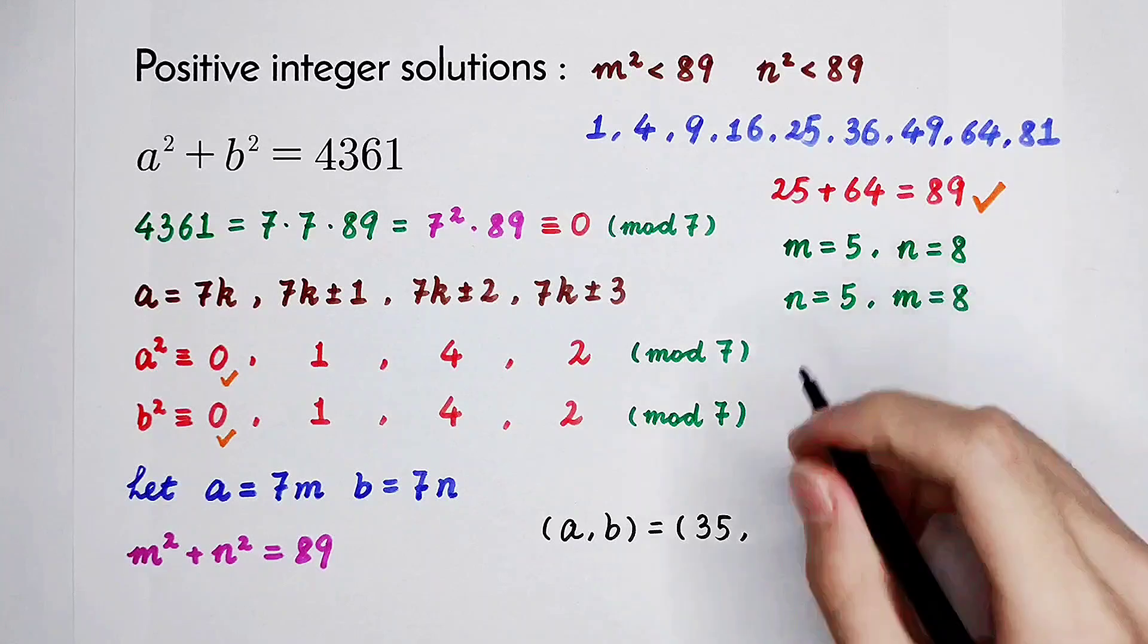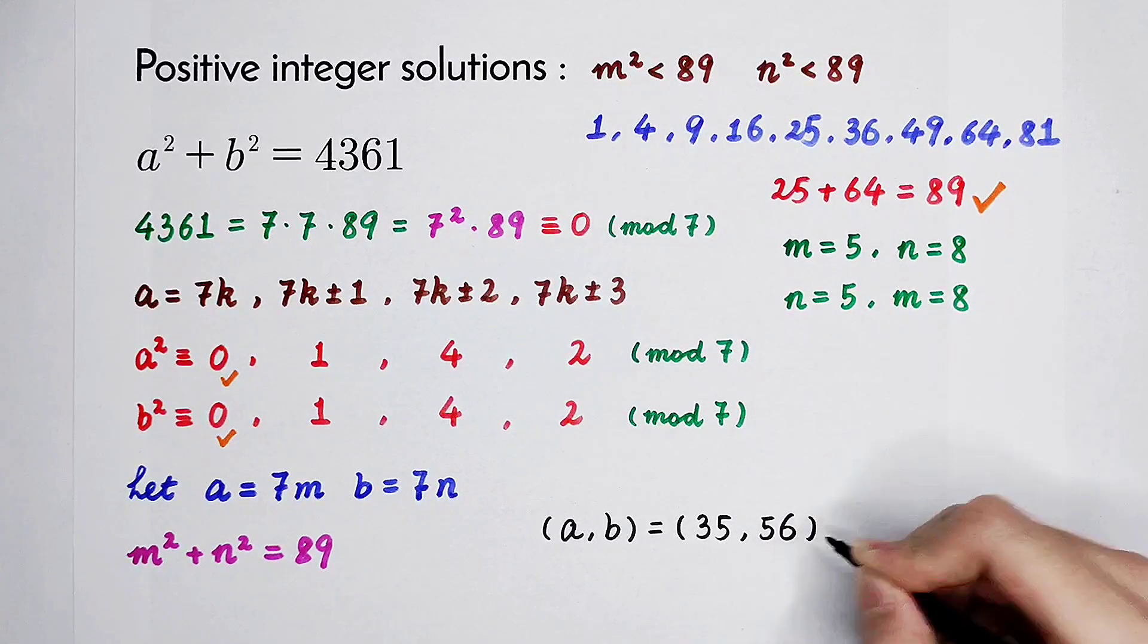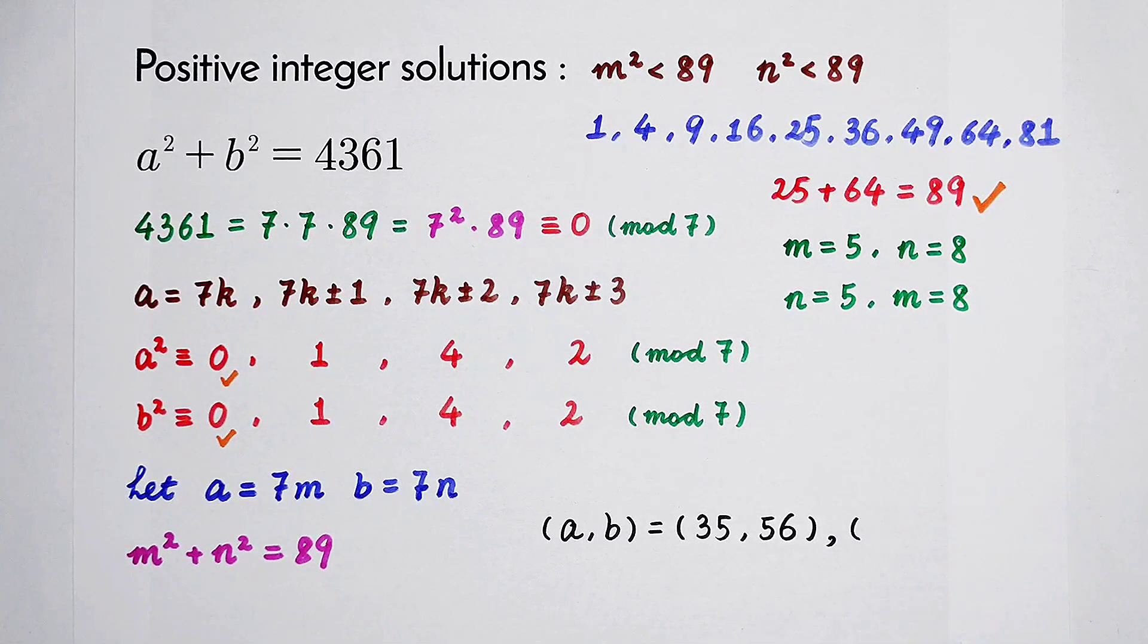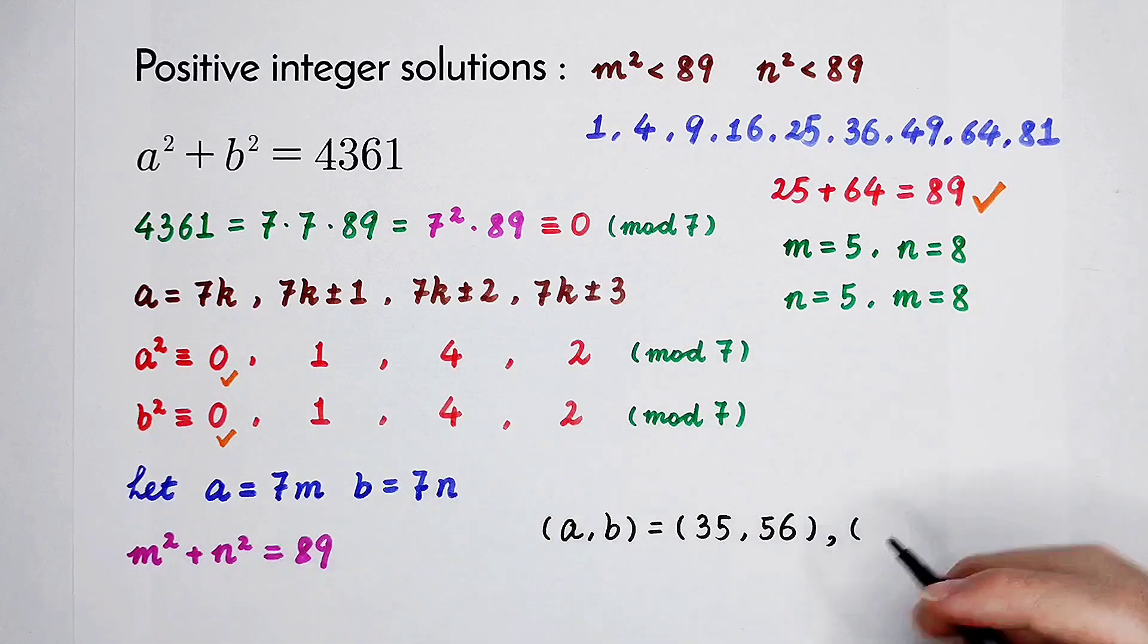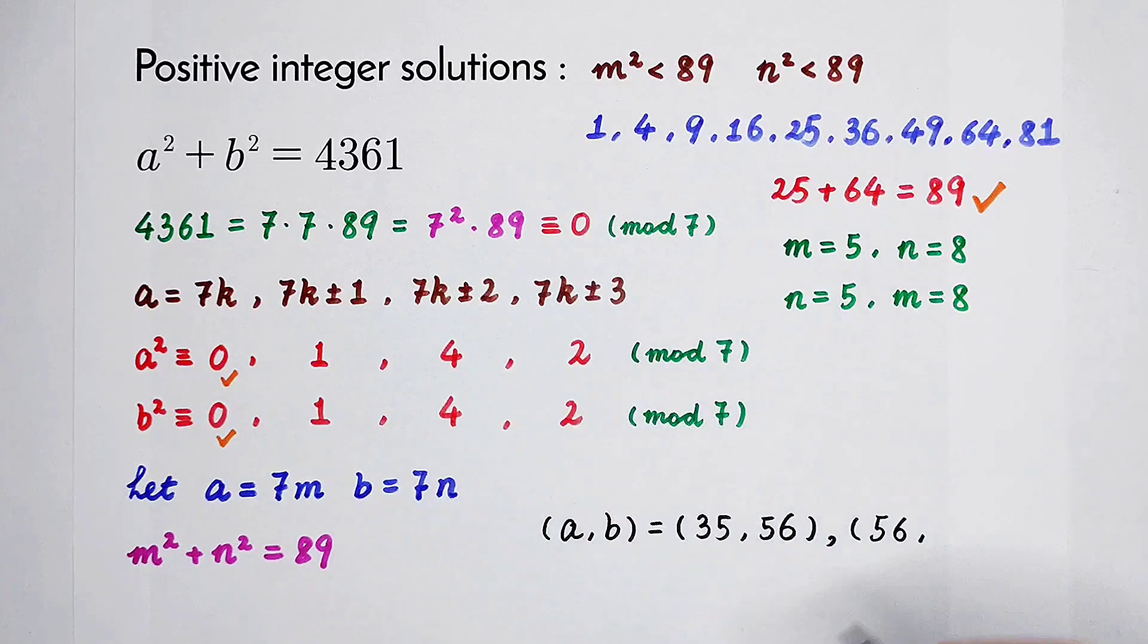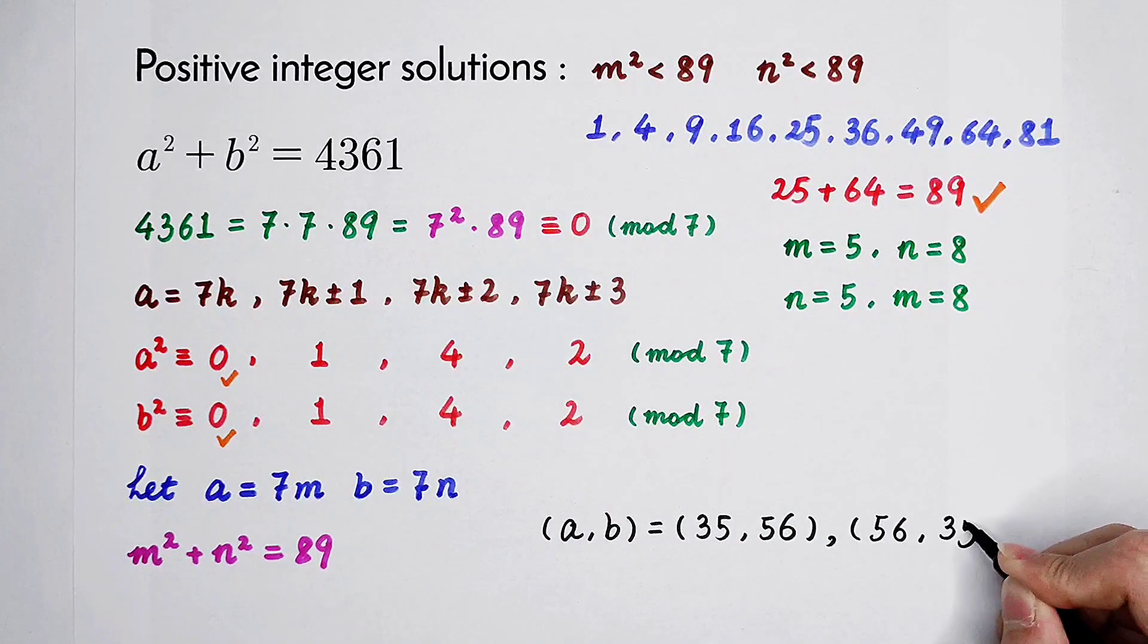b is 8 times 7, which is 56. And the solution here can also be a equals 56 and b equals 35.